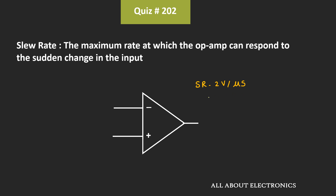That means at the most, the output can change by 2V in 1 microsecond. And we have been given that the input voltage is varying by 0.5V in 10 microseconds. That means dVin/dt is equal to 0.5 divided by 10 microseconds, or 0.05V per microsecond.